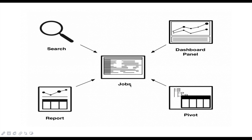Every search — whether you run a direct search, dashboard, pivot, or report — has searches running in the background. In reports you can see saved searches; in dashboards there are base searches, saved searches, or ad hoc searches. In a pivot, it automatically creates searches when you drag and drop fields. So for everything, a job is running to manage your searches.